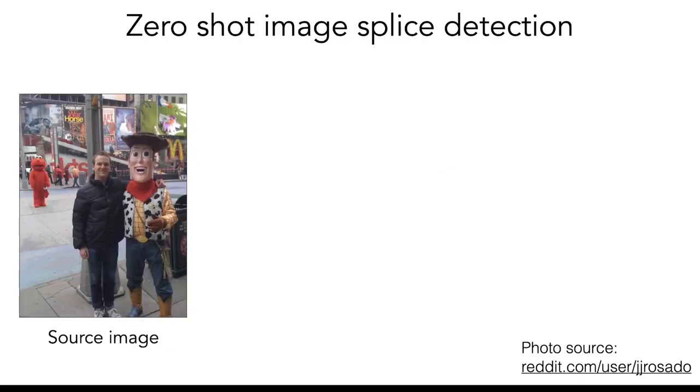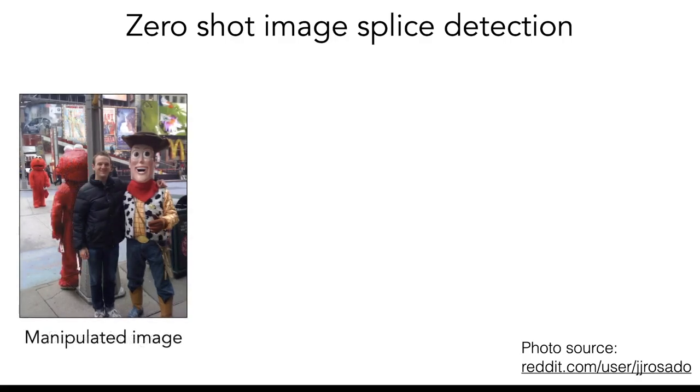One application of our method is what we call zero-shot splice detection. The spliced image contains content from multiple images, and hence should have inconsistent camera properties. For example, here is an original source image, which someone has manipulated by adding content from another image. You can see that it's semantically very consistent, so it may be helpful to use mismatches in low-level imaging detail to detect the manipulation.